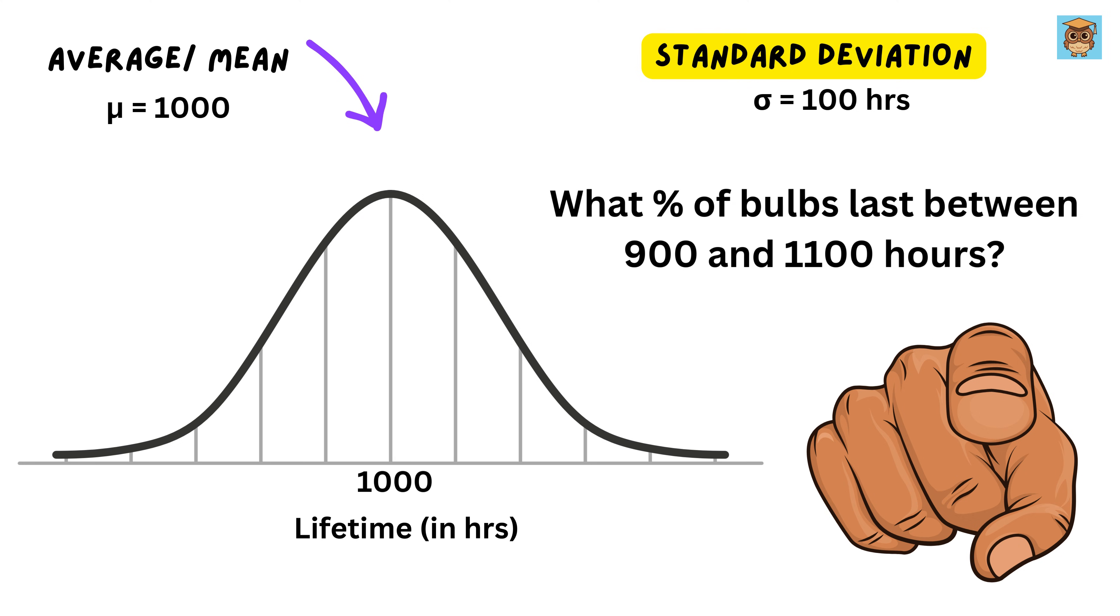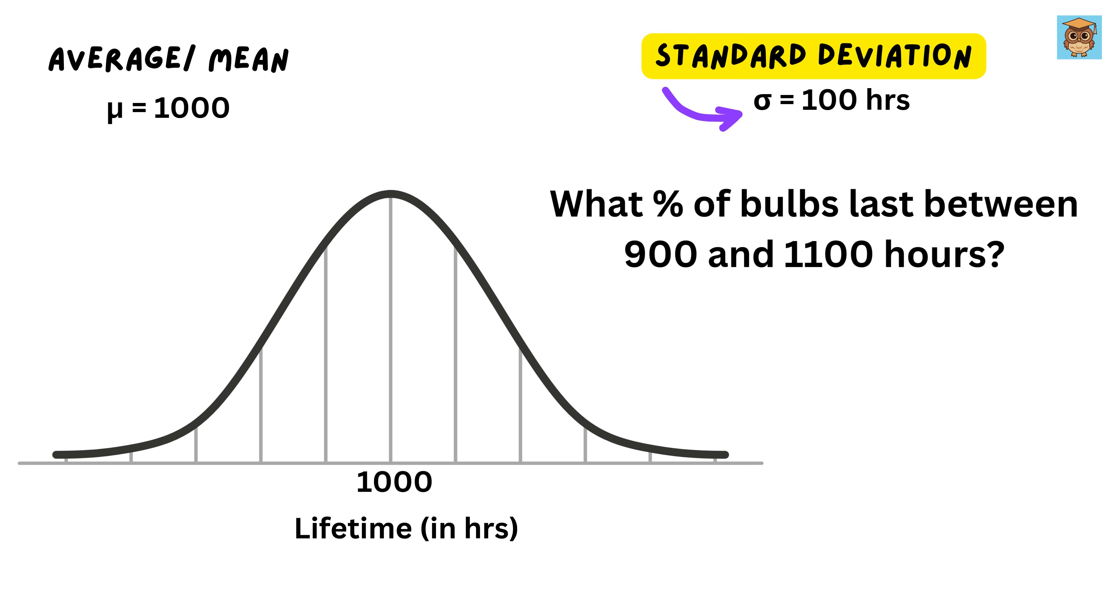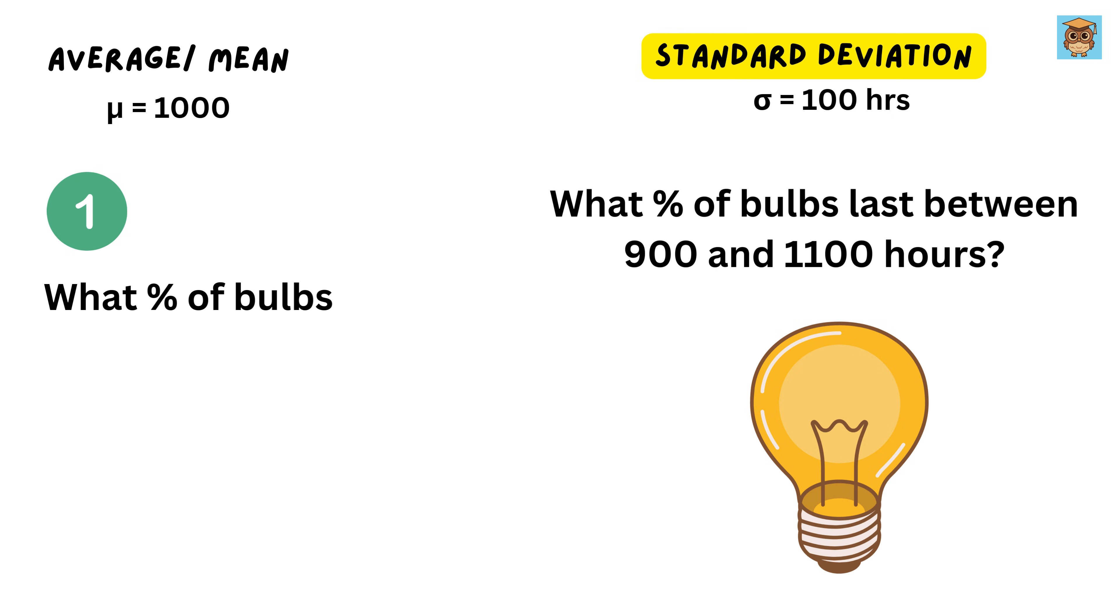So, can you solve it? The spread of the curve depends on the standard deviation, which is given as 100 hours. If the standard deviation is greater than this, then the curve will look something like this, but if it is less than this, then it will look like this. Now you know that in order to figure out how many bulbs last less than 1,100 hours, we will calculate the cumulative distribution function, or the CDF, of the normal distribution.